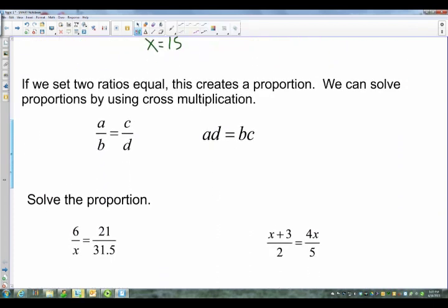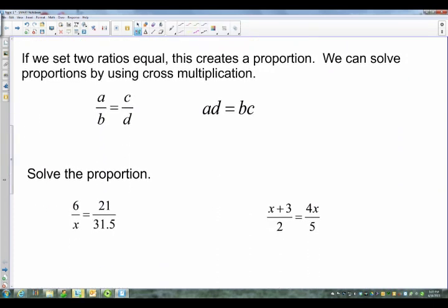Now what this leads to is something called a proportion. Now a proportion is when two ratios are equal to each other. Okay, so in this example you see here, I've got A/B equals C/D. Now we can solve these using something called cross multiplication. Now cross multiplication only occurs when you have two fractions equal to each other, or two ratios equal to each other. And for cross multiplication, I'm going to take my A and my D and I multiply. Then I take my B and my C and I multiply. That's the cross multiplication. And you can see that's what I end up with right over there. So it's AD equals BC.